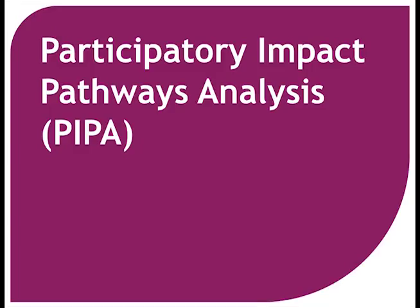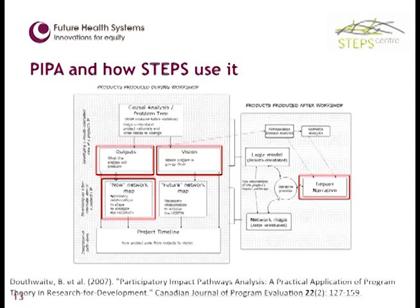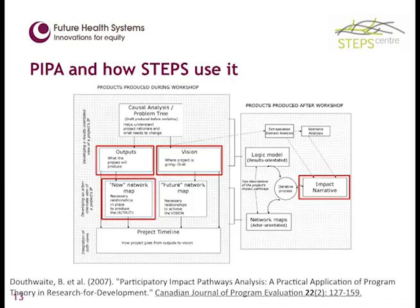If you're trying to see how your engagement might have broader outcomes, one way to do it is to get other stakeholders involved — that's what the participatory impact pathways analysis, or PIPA, does. This is the approach the STEPS Centre tends to focus on. PIPA was developed by Boru Duthwaite, who also developed innovation histories. The STEPS Centre doesn't do the full PIPA — they don't start with the causal analysis or problem tree, assuming that's been done during project development, and in FHS we've already done theories of change which map out those same sorts of things.